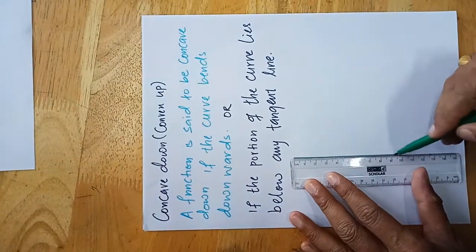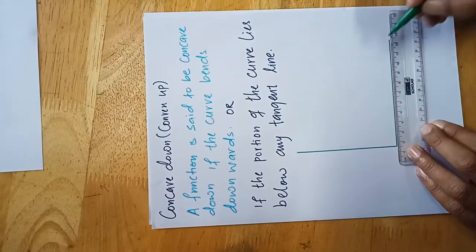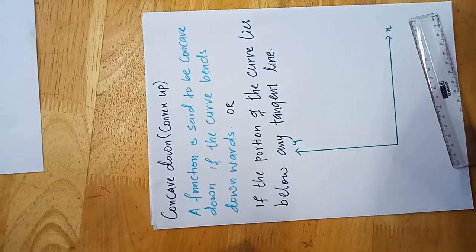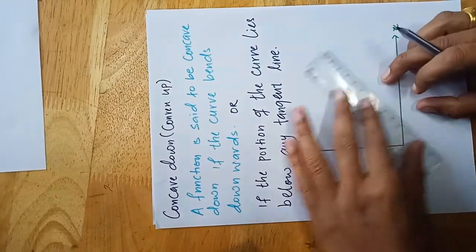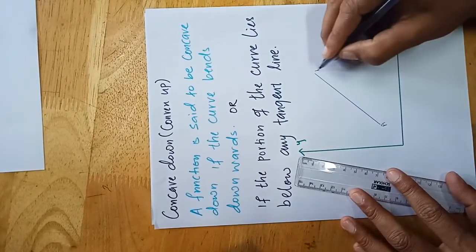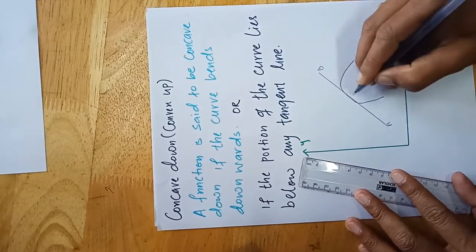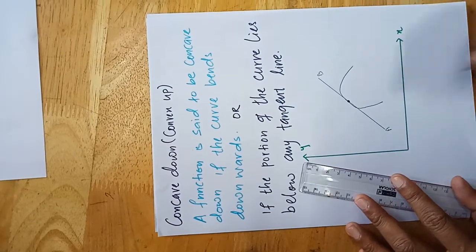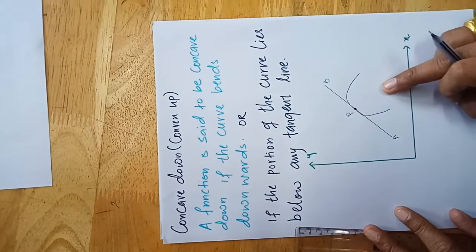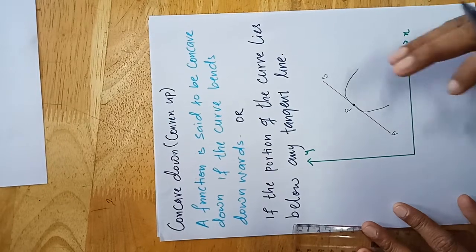Let's see this diagrammatically. On the same graph with x and y axes, if you draw a tangent line AB and the curve lies below the tangent line, then that kind of curve is called concave down or convex up.